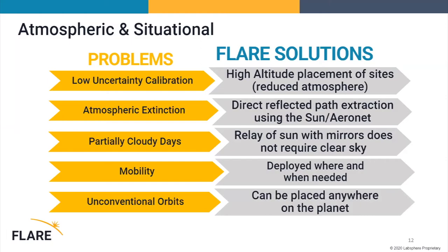Because of the mobility, we can put them in unconventional locations. For example, the equator is very hard to find good calibration sites unless they're a desert, and if you're interested in tropical environments there are really not a lot of good options. But you can bring a mobile Flare station and put it down on the equator to look at tropical rainforests or coral health. You could even put these on the water — bring them on a boat — and the slight motion of the boat doesn't affect the point source nature because of the field of regard.